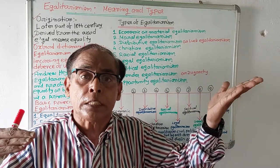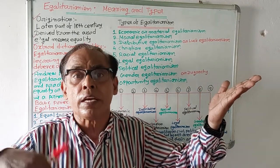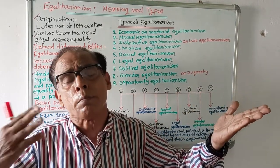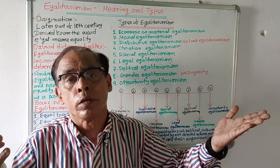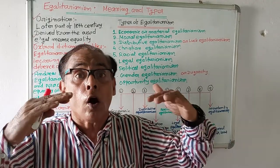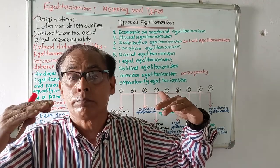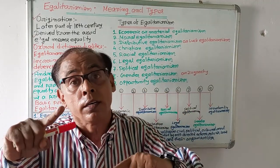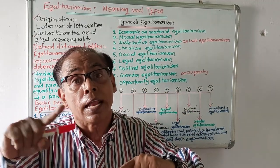Number six: legal egalitarianism. Legal egalitarianism means before law all are equal — he may be a prime minister, a constable, a manager, or a common person. Before law, all are equal. Law will treat all alike.